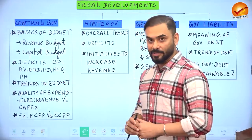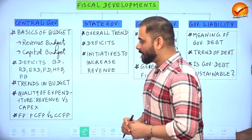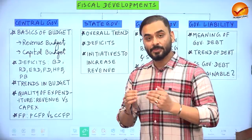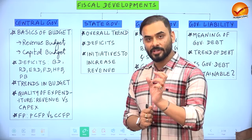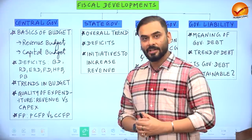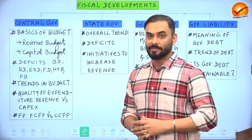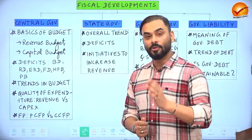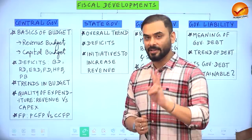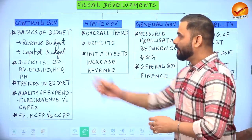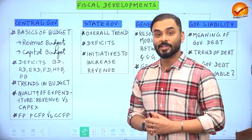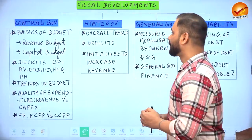After looking at trends in the budget, we will analyze the nature of government expenditure and whether the quality of spending is good. We will also discuss two important concepts: counter-cyclical fiscal policy and pro-cyclical fiscal policy. Then, having looked at the central government's position, we will examine state governments' fiscal developments.